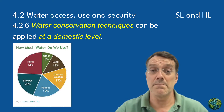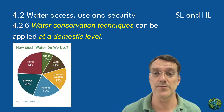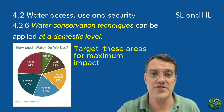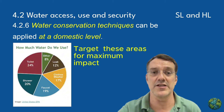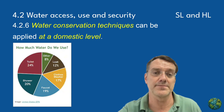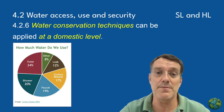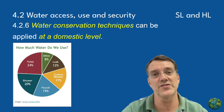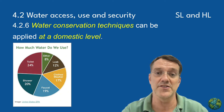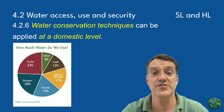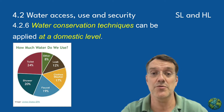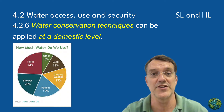Water conservation techniques at the domestic level can significantly reduce household water consumption. These approaches include water metering to track usage, rationing during shortages, greywater recycling systems that reuse lightly used water, low flush toilets, and rainwater harvesting. Domestic conservation matters because it directly engages individuals in sustainability practices, reduces pressure on municipal water supplies, and can generate substantial cumulative savings across communities. The most effective conservation programs combine infrastructure improvements with behavioral changes at home.